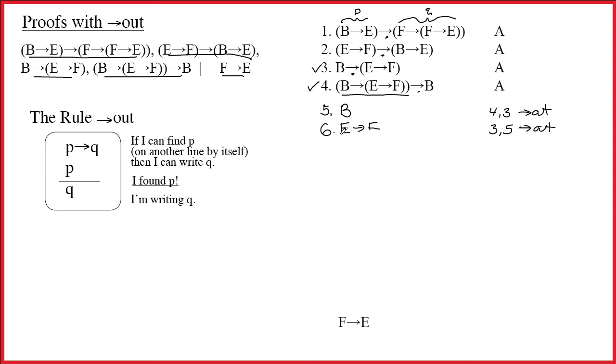Okay. Well, I'm still working my way down. B is too short to be interesting. I might quickly glance at six and say, hey, if I had E, then I could write F. But I don't have an E all by itself any place. What are we doing? Back up to the top. Okay. Line one. We say it again. If I can find B arrow E on a line by itself, then I can write F arrow F arrow E. Do I find B arrow E on a line by itself? No. Don't have it. Line two. If I can find E arrow F on a line by itself, then I can write B arrow E. Ah! E arrow F. It's right there.